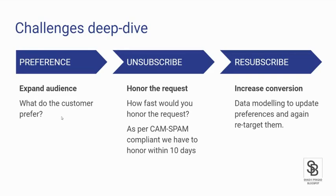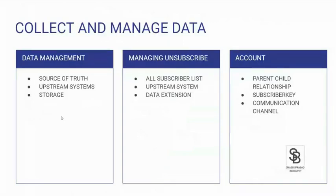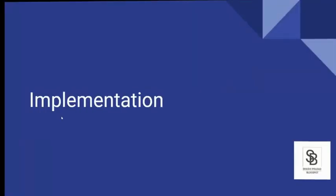Hope everyone is following along. If you need more clarity, ask questions relevant to this topic — we'll definitely touch every point. So before going to the solution, I want to understand: data management is one of the very important things when defining a preference center; managing those unsubscribes is the second important thing; and the third is understanding how your architecture is built for Marketing Cloud. Now I'm going to the solution — the preference center and how I'm going to implement it.